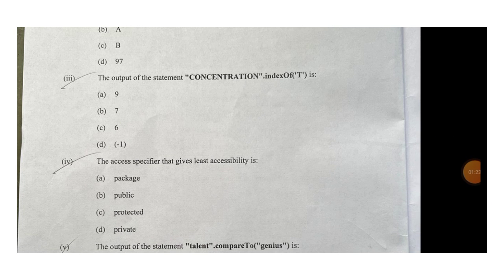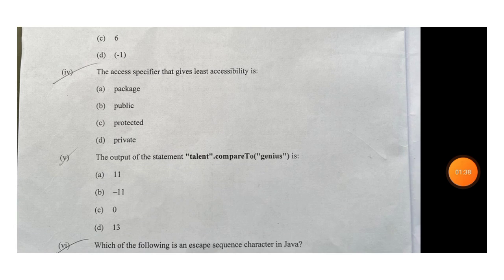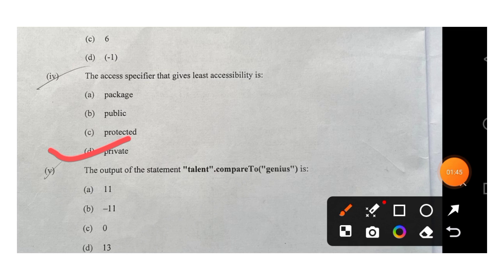Question three: output of the statement 'concentration.indexOf(...)'. The index begins at zero — zero, one, two, three, four, five, six — so it is at position six because we count from zero. The answer is six. Question four asks for the specifier that gives least accessibility — that will be 'private'. Private is the most secure, so it gives least accessibility.